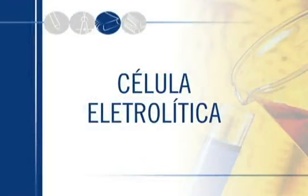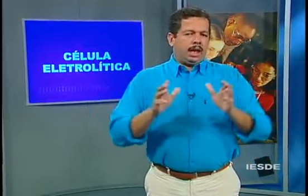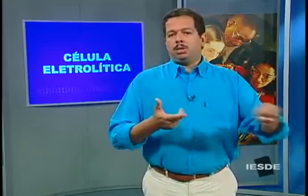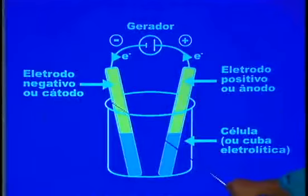Electrolytic cell. You will now properly understand how the electrolysis process works. The name given to the container where you perform electrolysis is the electrolytic cell, also called an electrolytic tank by some authors. Any electrolysis is based on the same general scheme I will present — what changes are the elements involved: sometimes silver, sometimes nickel, sometimes chromium. The solutions change, but the base of the process is the same. That is what you need to understand.